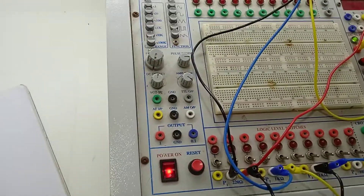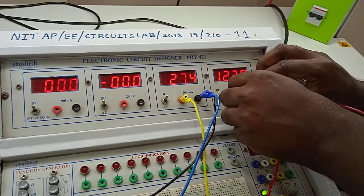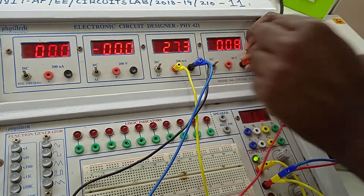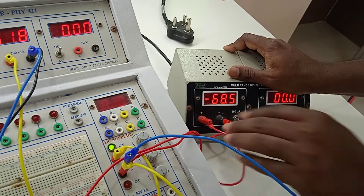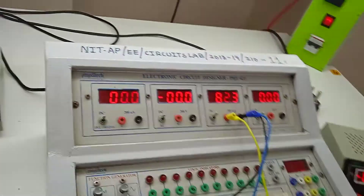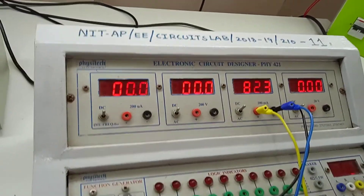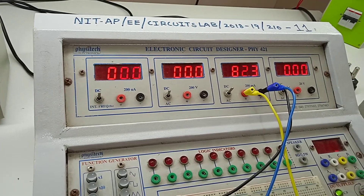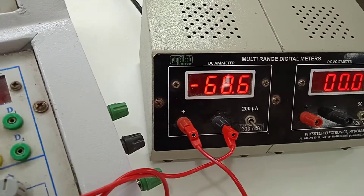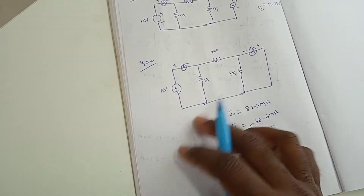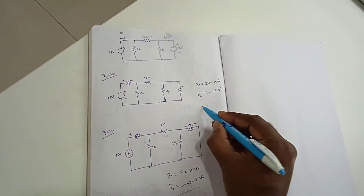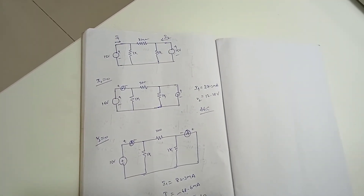Now we replace the voltmeter with an ammeter — the voltmeter positive is connected to ammeter negative and voltmeter negative to ammeter positive to set up for the short circuit condition. The readings are: I1 equals 82.3 milliamperes and I2 equals minus 68.6 milliamperes. From these two values you can calculate B and D for the pi circuit, and from the previous values you can calculate A and C.